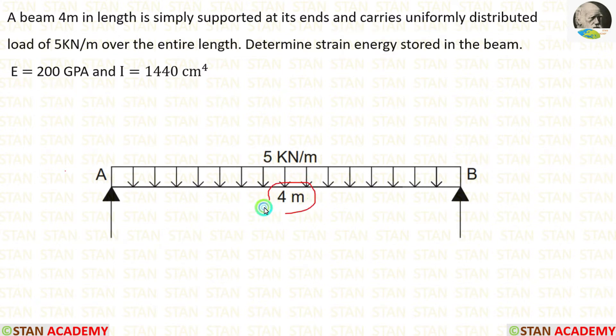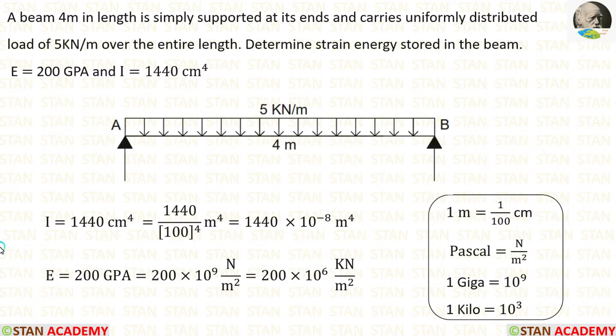The length of the beam is given as 4 meter. The beam is carrying UDL of 5 kN per meter over the entire span. Now let us convert the units. Let us keep all the units in meter and kN.